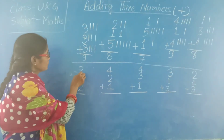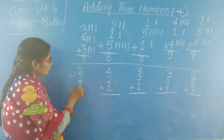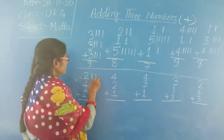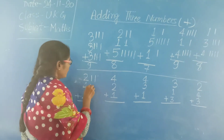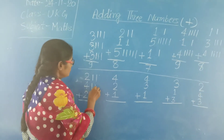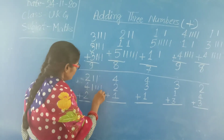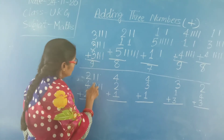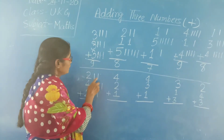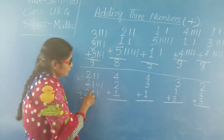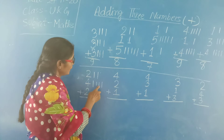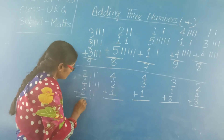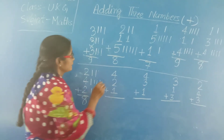Next: 2, 4, 2. Draw 2 lines: 1, 2. Then 4 lines: 1, 2, 3, 4. Then 2 lines: 1, 2. Now count: 1, 2, 3, 4, 5, 6, 7, 8. The answer is 8.